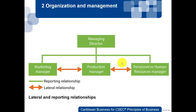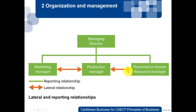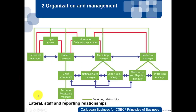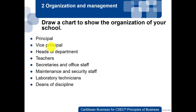Looking at another organizational chart example: the managing director is the boss, in charge of three managers — but those three are on the same level. The marketing manager does not answer to the production manager or HR manager; they are all lateral relationships. The chain of command goes up, so all three managers answer to the managing director, while the three are at the same level laterally.